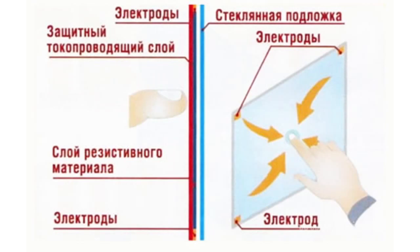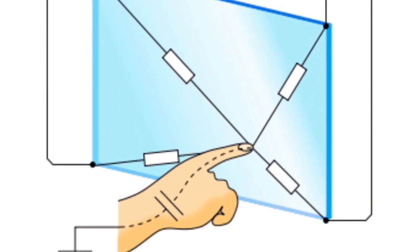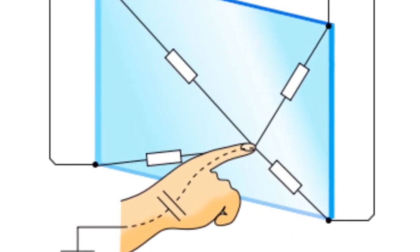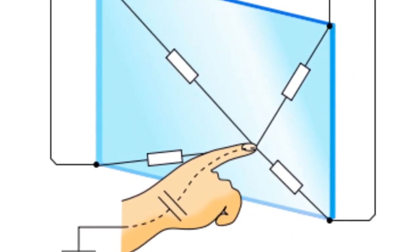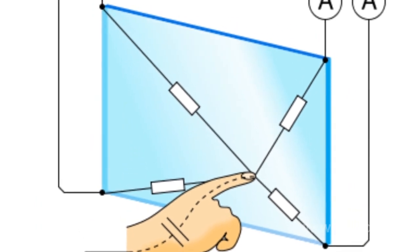Before the touch, the screen bears some electric charge. When the screen is touched, the point with a potential lower than the potential of the electrodes appears in the conductive layer. The electrodes, located in all four corners, follow the charge current in the screen and define the position of the contact point in that way.